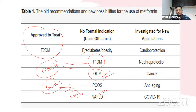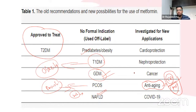New applications under investigation include anti-aging — only two things have shown benefit in addressing aging: calorie restriction and metformin. It is also being investigated for cancer and, with unclear data, for nephroprotection. Its pleiotropic effects on endothelial and lipid abnormalities contribute to its cardioprotective potential.